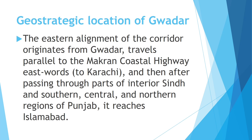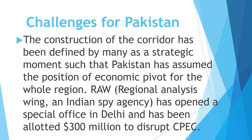While explaining the Makran Coastal Highway, the Arabian Sea was mentioned. The surface area of the Arabian Sea is 3,862,000 square kilometers. The next slide covers challenges for Pakistan. The construction of the corridor, named CPEC, has been defined by many as a strategic movement such that Pakistan has assumed the position of an economic pivot for the whole region. India's Regional Analysis Wing, an Indian spy agency, has opened a special office in Delhi and has been allotted 300 million US dollars to disrupt CPEC.